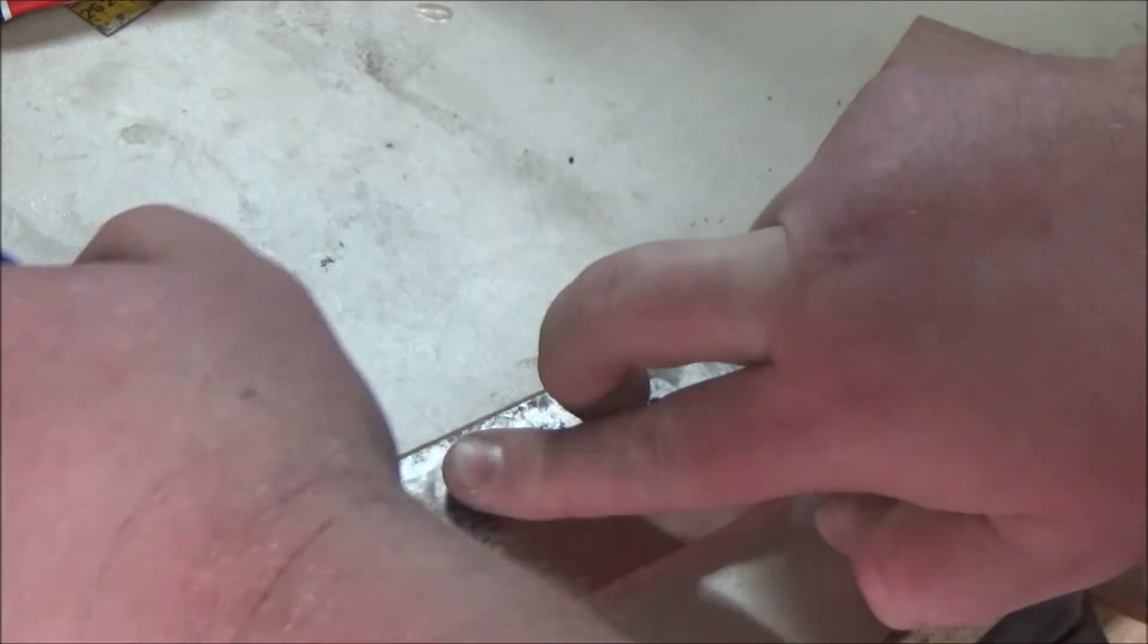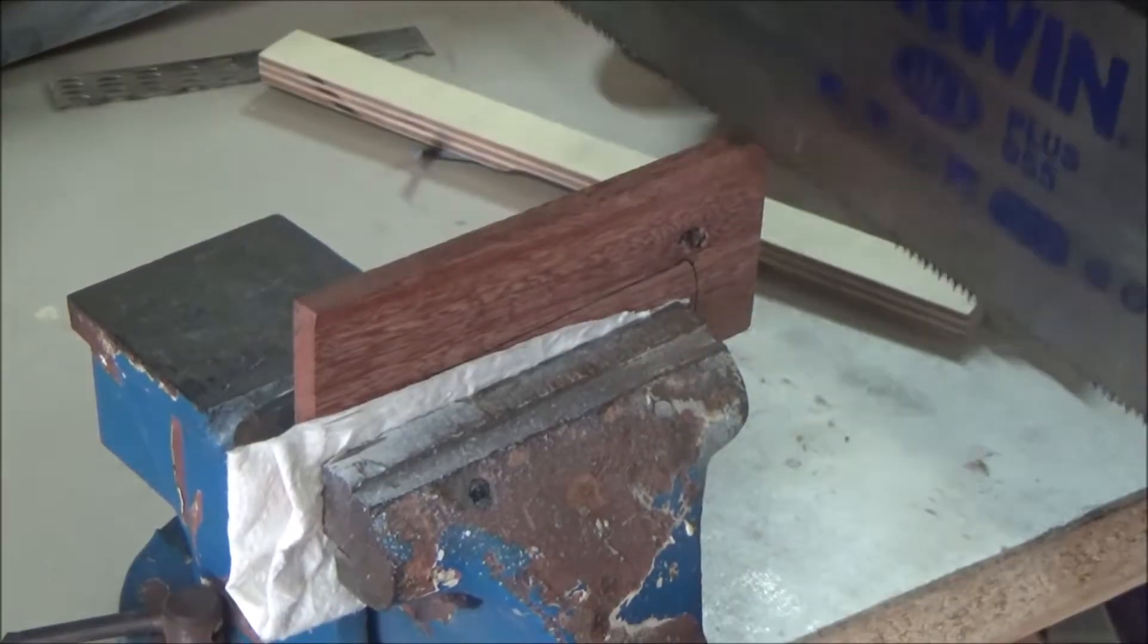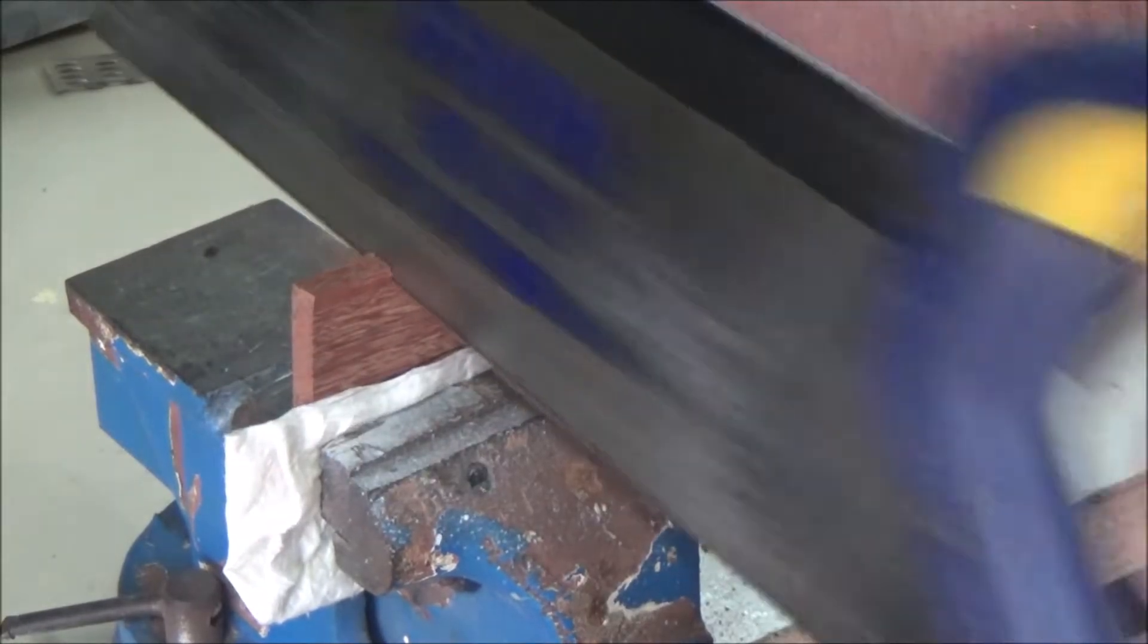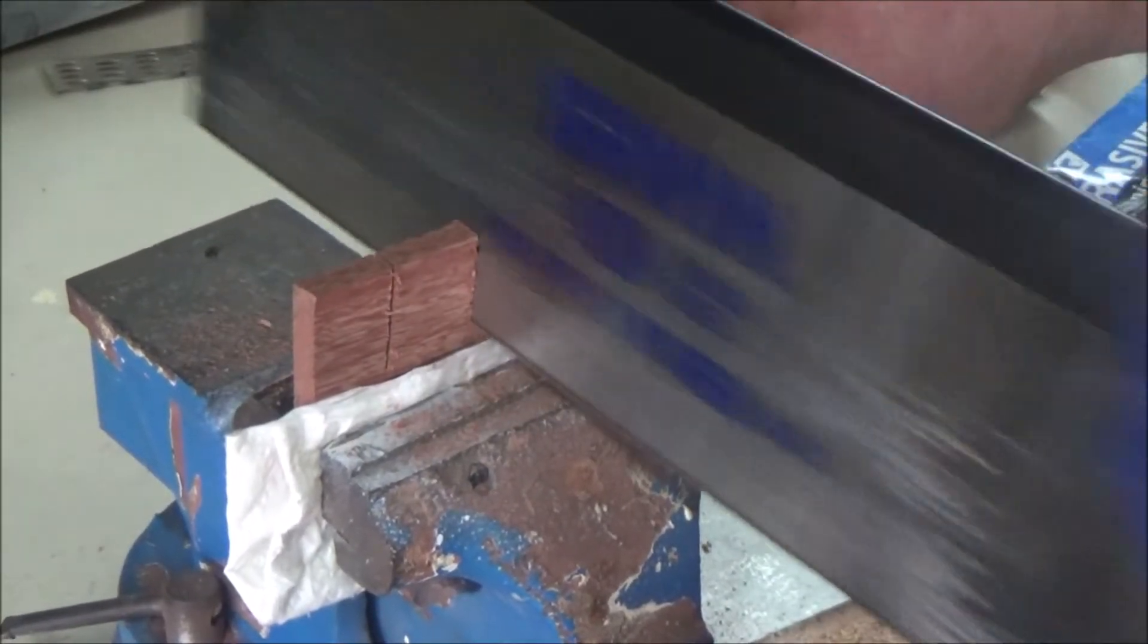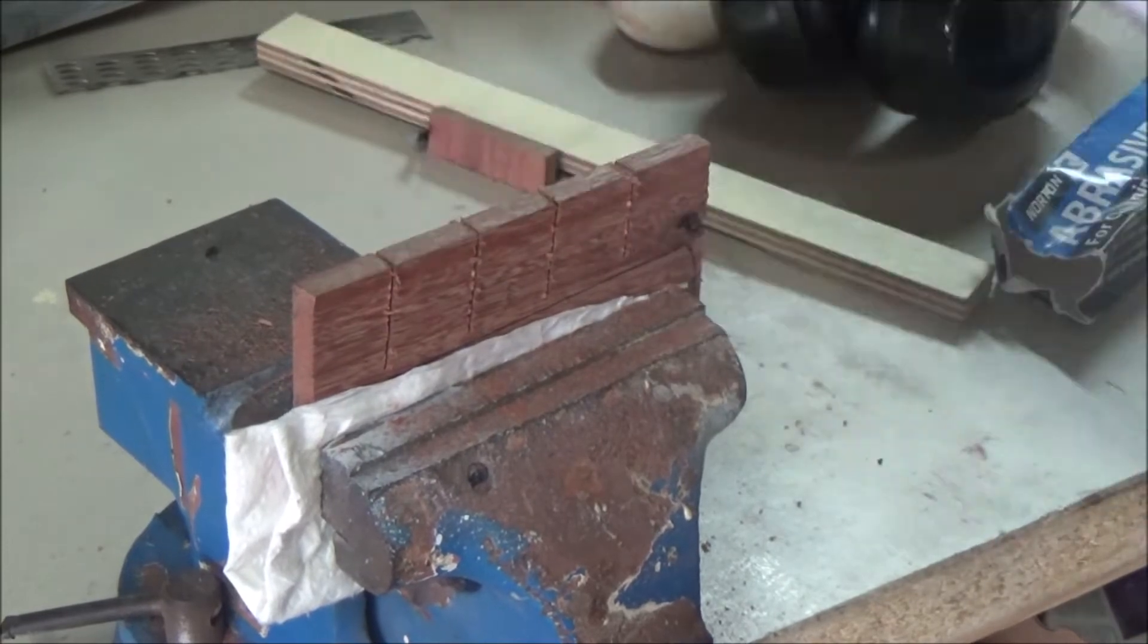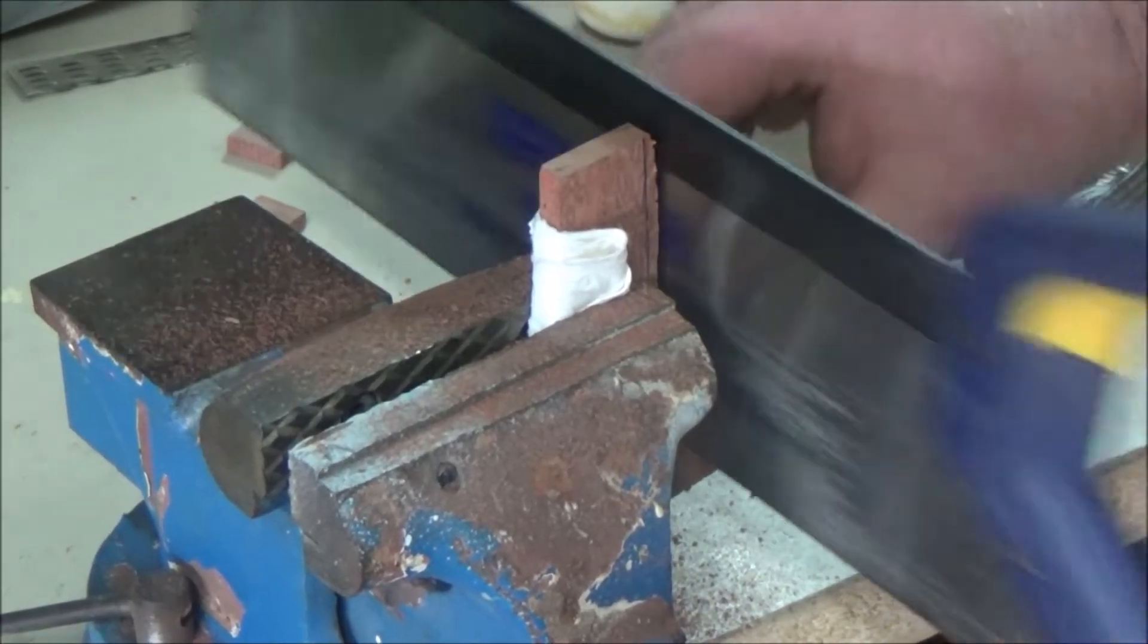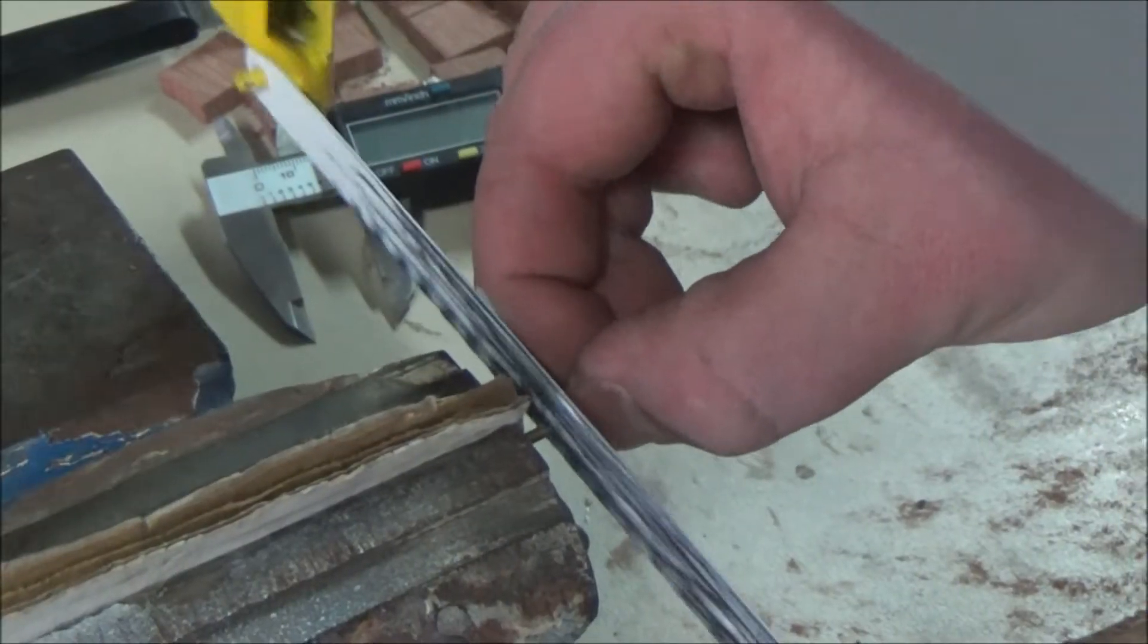For the handle, I'm using Jarrah, which is a type of gum tree. I've prepared them off camera to 7mm thick. Also, instead of steel pins like on the original knife, I chose brass, as I like the contrast between the dark wood and the colour of the brass.